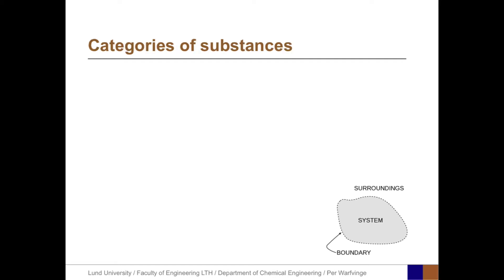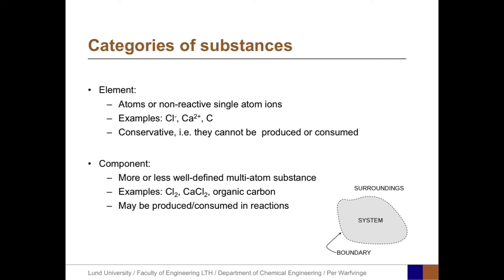Before I continue with the calculation methodology, I want to make some definitions regarding substances. An element is an atom or non-reactive single atom ion, for example chloride, calcium ion, or carbon. They are conservative, meaning they cannot be produced or consumed. Components are well-defined multi-atom substances like chloride gas, calcium chloride salts, or organic carbon. Components may be produced or consumed in chemical reactions.